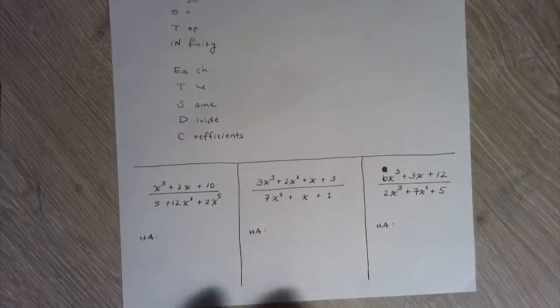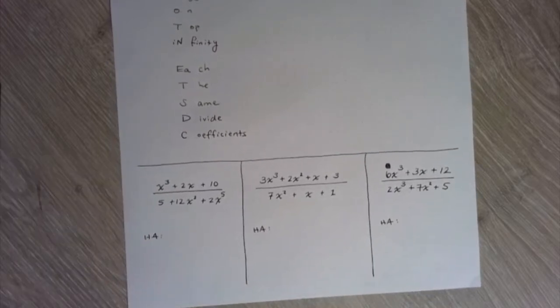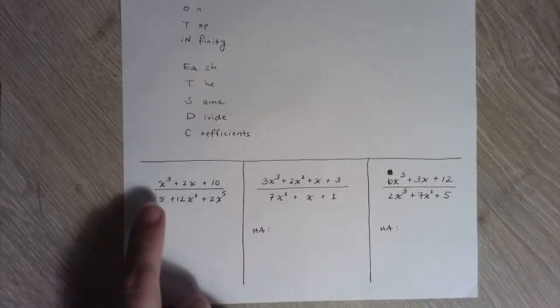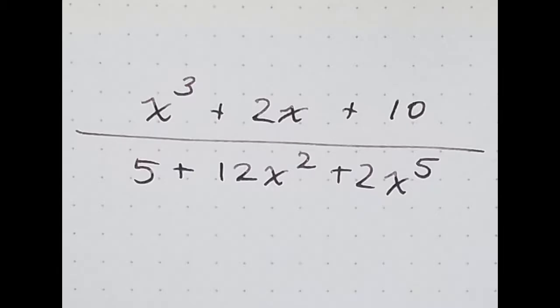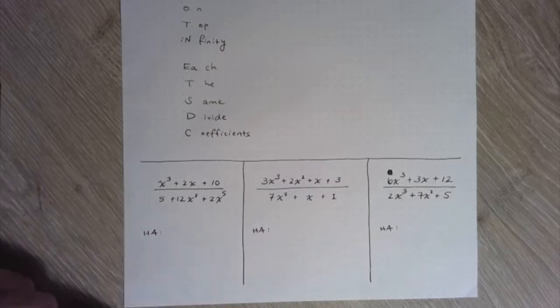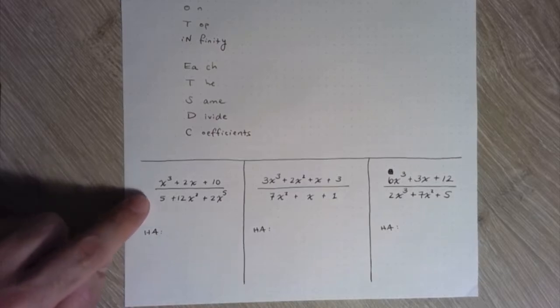All right, so we're going to do these three examples right here. So let's look at this rational function. Again, rational functions are polynomials divided by polynomials. So I look through and I have x cubed plus 2x plus 10 on top. On the bottom, I have 5 plus 12x squared plus 2x to the fifth. So you'll see not both polynomials are in descending order, but that's all right. We identify the highest exponent in the numerator, and we look at the highest exponent in the denominator.